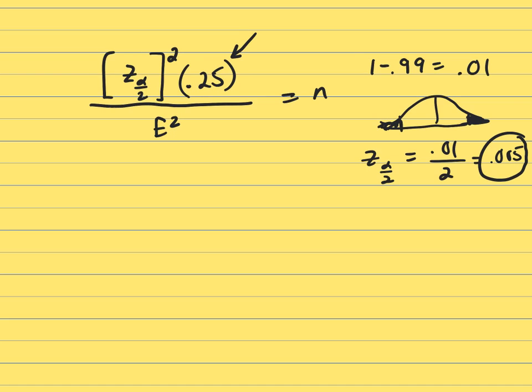You need to either use the normal distribution table or use StatCrunch to figure out what Z corresponds to an area or probability of 0.005, and that is 2.58.